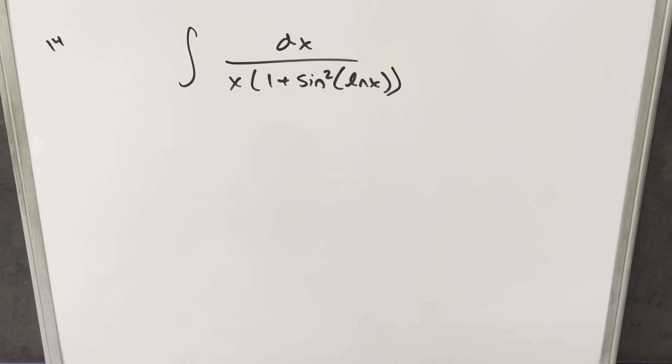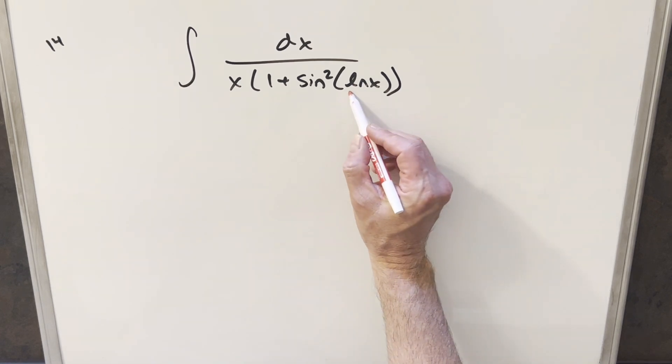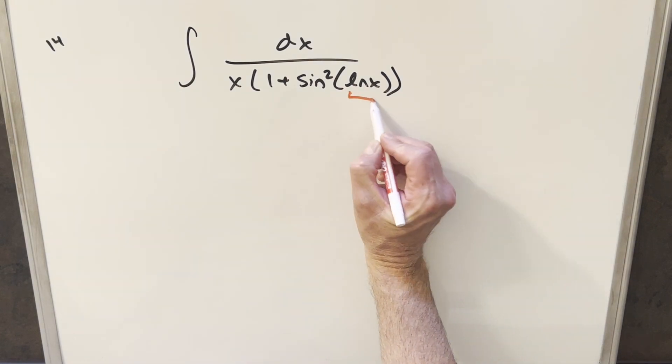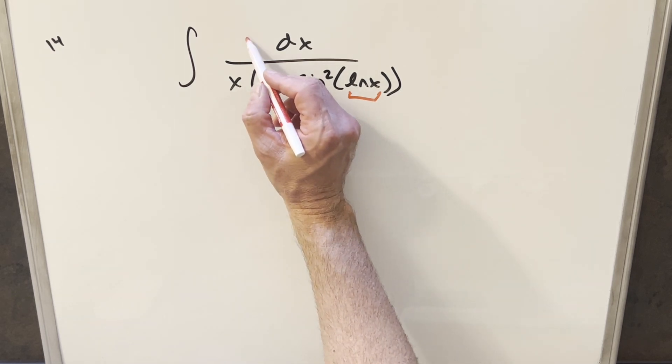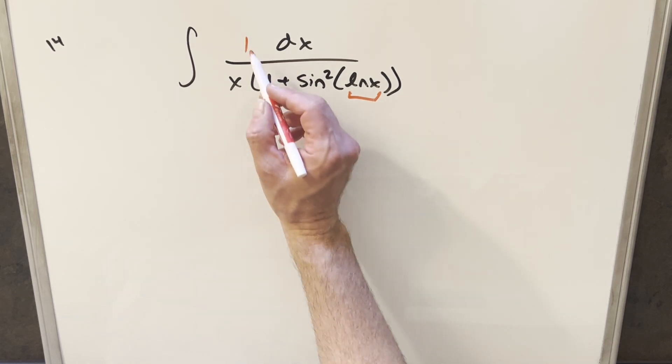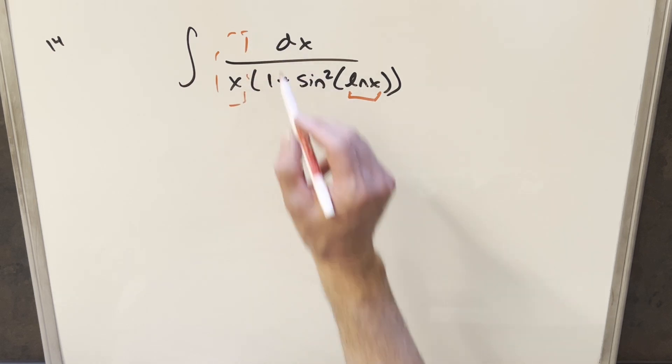Okay, to get started with this, the first thing I noticed is a possibility for a u-substitution. We don't like having lnx inside the trig function, but it's going to be okay because we have 1 over x here, and we have exactly that derivative right here. So we'll just go ahead with that for the first step.